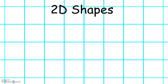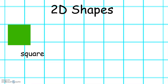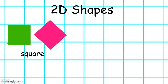We will also be learning some 2D shapes. This is called a square. Squares have 4 equal sides and 4 corners. Sometimes squares look like this.